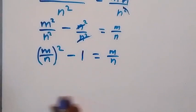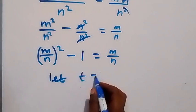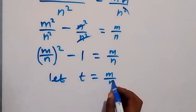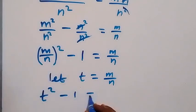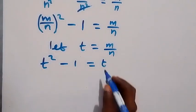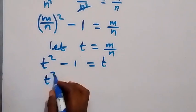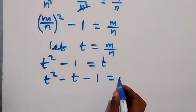We have m over n common, so let t equal m over n. We rewrite the equation as t squared minus 1 equals t, then rearrange to form the quadratic equation t squared minus t minus 1 equals 0.